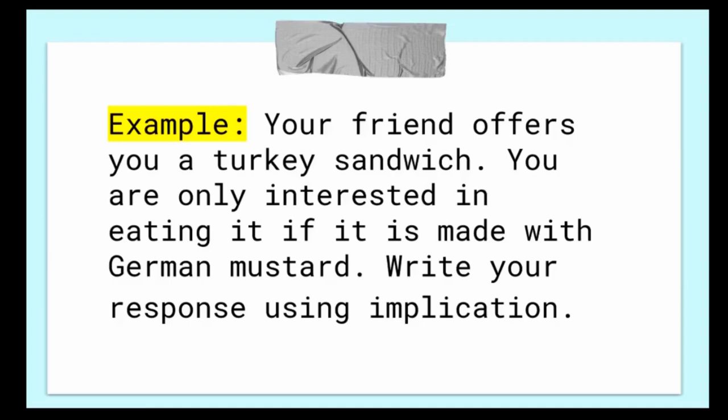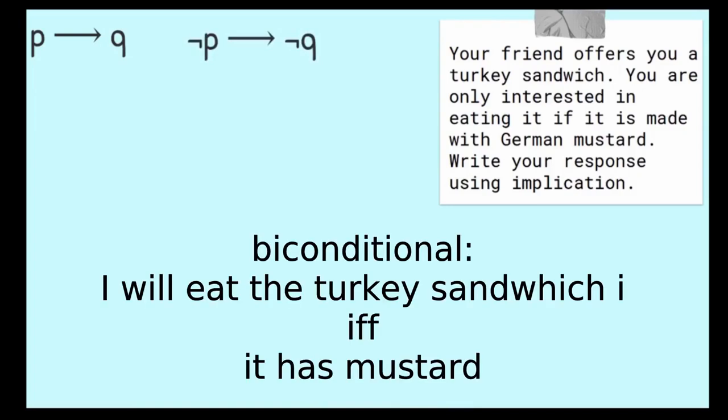So here's our example. Your friend offers you a turkey sandwich. You are only interested in eating it if it is made with German mustard. Write your response using implication. So let's look at this. Remember, we're going to write a conditional statement. If p then q. And if not p, not q. If you're going to eat a turkey sandwich, if it has German mustard, you're not going to eat the turkey sandwich if it doesn't have German mustard. Because there's that condition put on you eating the turkey sandwich. It has to have German mustard for you to eat it. So if it doesn't have German mustard, you won't eat it. So if p, then q. If not p, then not q.